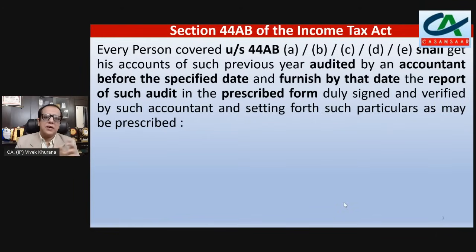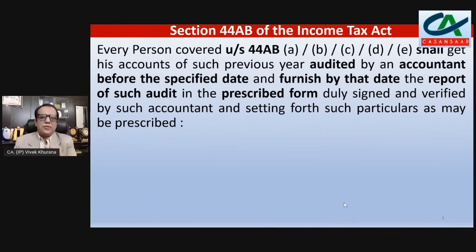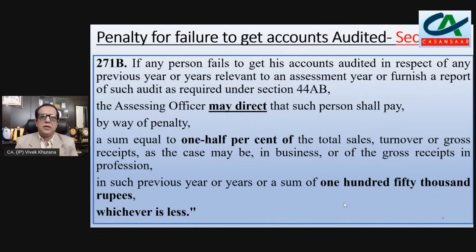Regarding today's video: section 44AB — every person covered under section 44AB clauses A, B, C, D, E shall get his accounts of such previous year audited by an accountant before the specified date, and furnish by that date the report of such audit in the prescribed form, duly signed and verified by such accountant and setting forth such particulars as may be prescribed. So section 44AB clearly talks about auditing from an accountant before the specified date. If you have not done so, there is a penalty under section 271B.